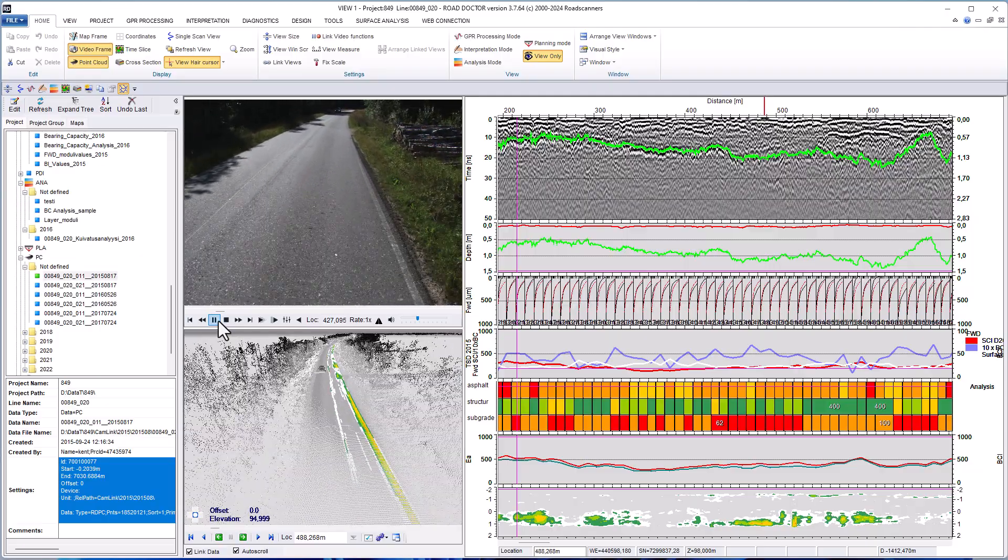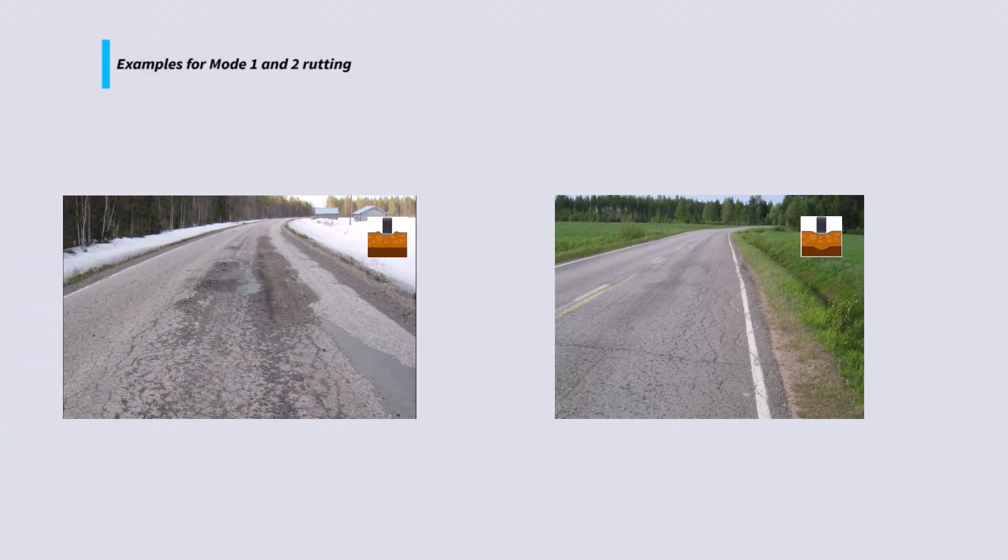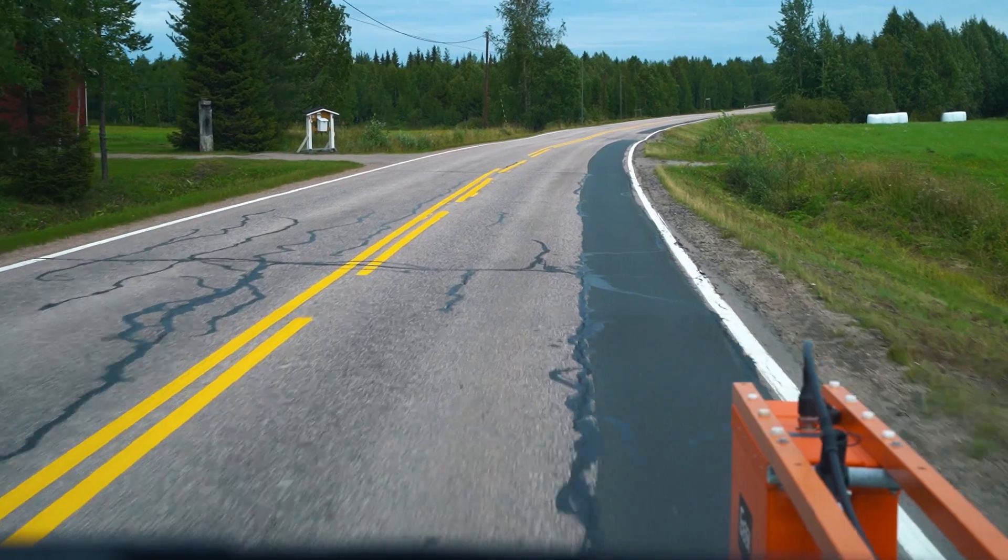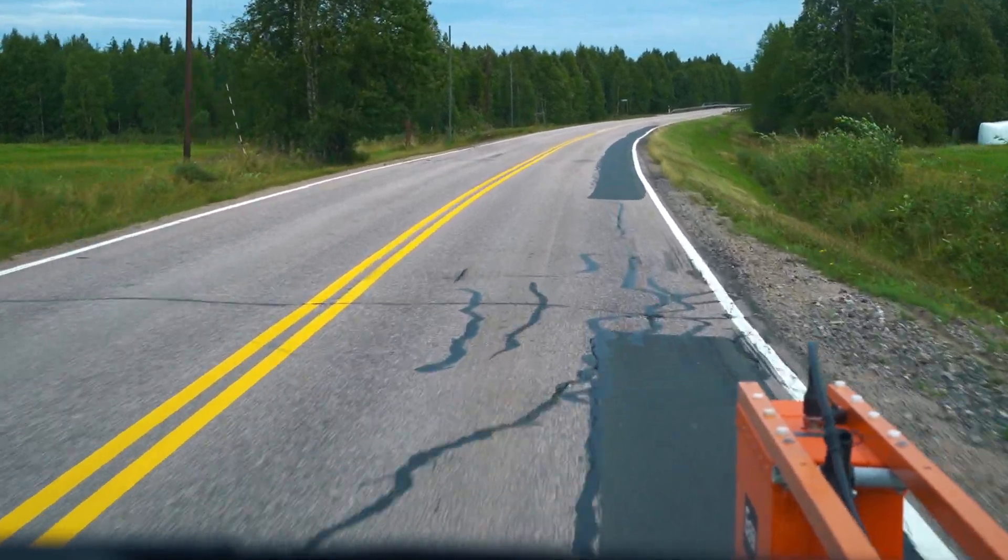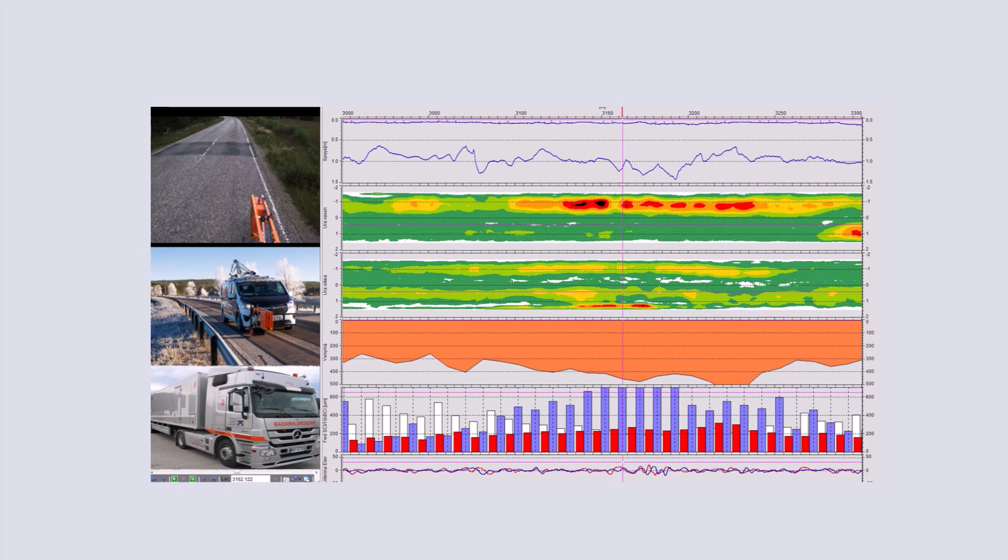Deflection data helps in assessing the load bearing capacity and identifying weaknesses in the pavement structure, while GPR data offers detailed insights into internal structural composition and potential subsurface problem issues.